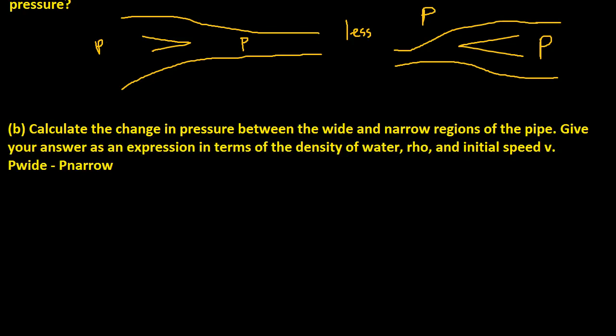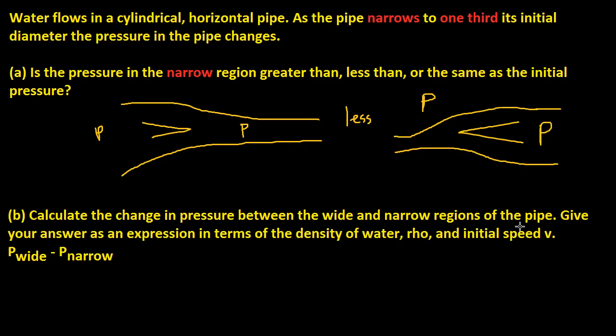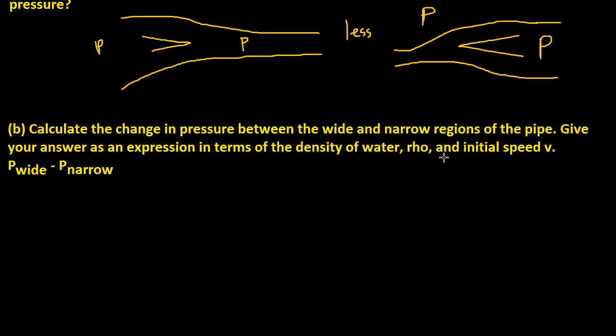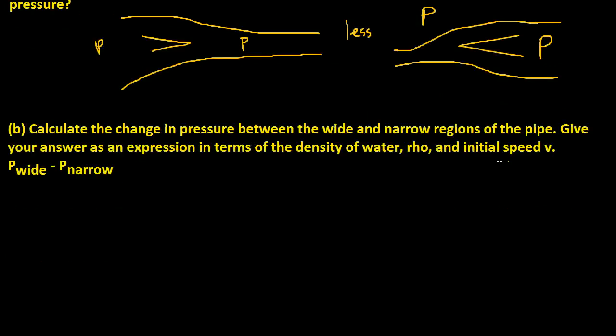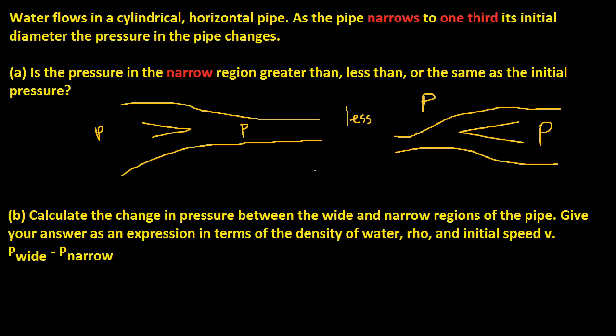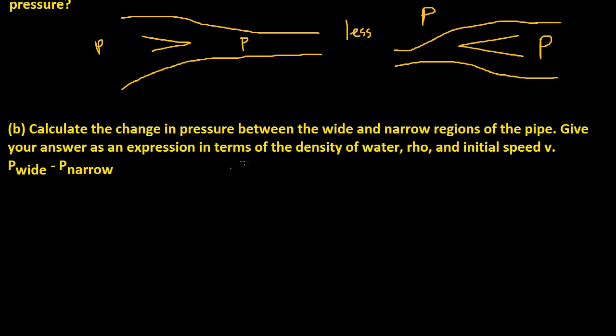Okay, so the next problem says calculate the change in pressure between the wide and narrow regions of the pipe. Give your answer as an expression in terms of the density of water rho and the initial speed v. For me, it says the pipe narrows to one-third of its diameter.